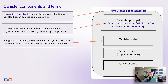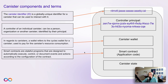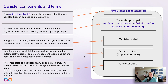Next we have the smart contract. The smart contract in terms of the Internet Computer is the canister's application code. They are stateful programs designed to automatically execute, control, or document events and actions according to the configuration of the contract — essentially what powers your application. Last we have the canister state. The entire state of a canister at any given point is considered the canister state, divided into the system state and the user state. When the canister state is changed, this refers to the result of any operation, function call, or transaction that changes the information stored within a canister.